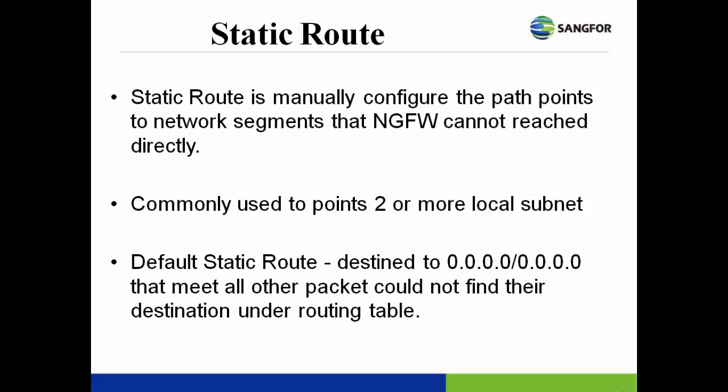A default static route is another way to configure a static route, with the destination set to the 0.0.0.0 subnet and mask. It is also called the gateway of last resort, to ensure all packets that cannot find their destination in the routing table are forwarded out to the gateway.